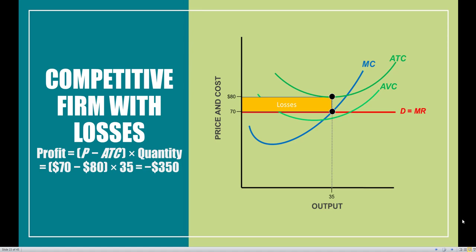The final scenario a firm can find itself in the short run is going to be with some type of losses. In order to find the losses, we go ahead and follow the same five-step pattern for maximizing profits. This is going to be the more complex case because we see that there's going to be an additional scenario that we need to talk about.